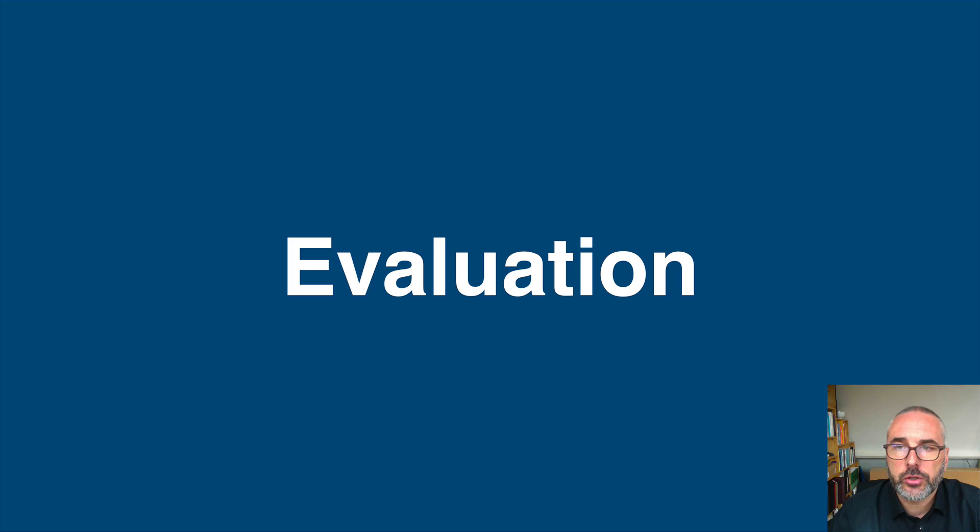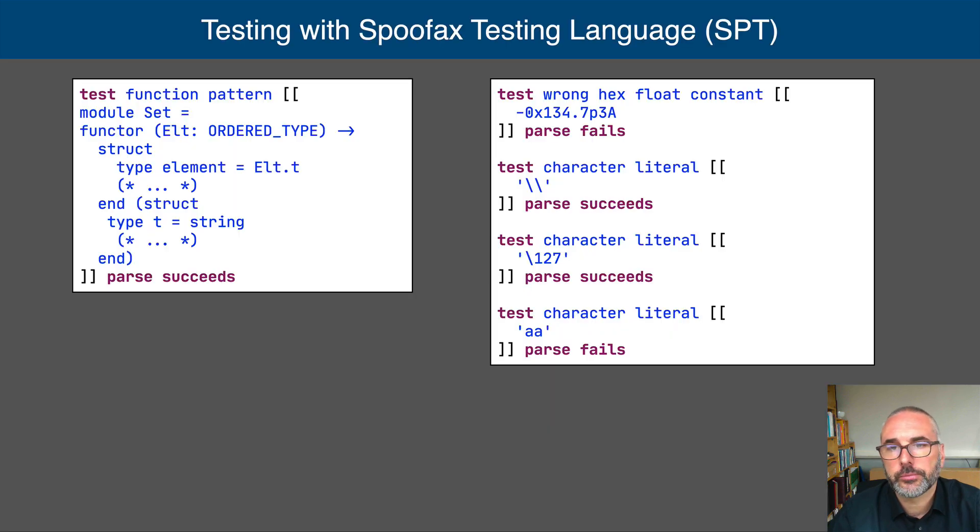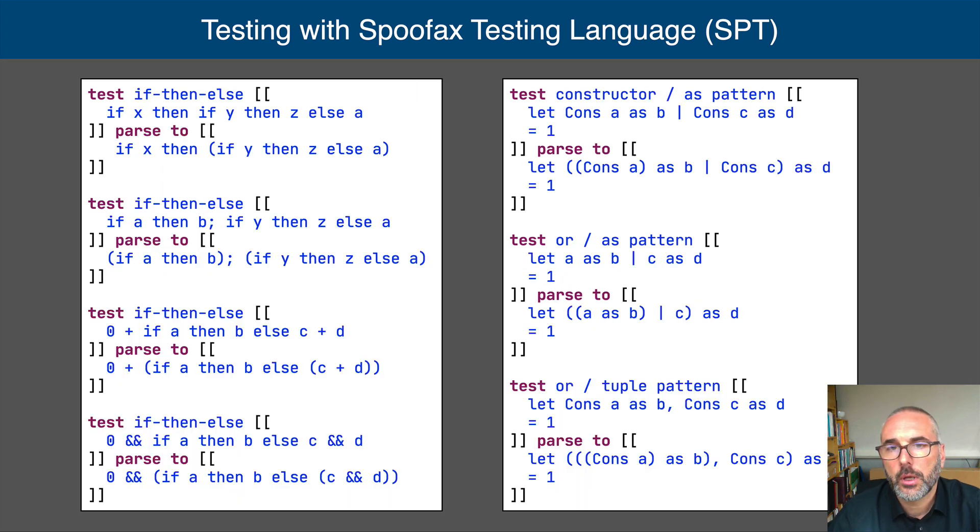We have validated the syntax definition using testing. We have defined some 405 tests using the SpoofX testing language, SPT. In this language, one defines program fragments for which parsing should succeed or fail. We have used a try OCaml web editor from OCaml Pro to resolve questions about syntax and disambiguation when the reference manual was not clear. In SPT one can also test the correct application of disambiguation rules by specifying an explicitly disambiguated version of the fragment as test outcome.